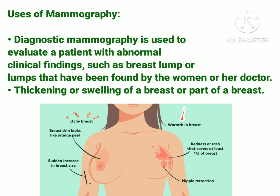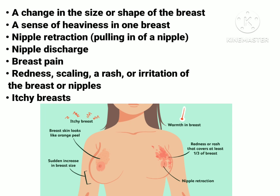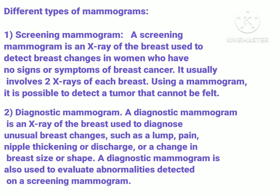To know the shape, size, and position of this mass, the doctor recommends mammography. Second, whenever a doctor finds swelling or thickness of a breast, mammography is also recommended. Third, whenever there is a change in size or shape of a breast. Next: sense of heaviness in one breast; nipple retraction, meaning when a patient's nipple is turned inward or lying flat against the breast; nipple discharge, meaning any release of fluid from the nipple during an unusual period; breast pain; redness, scaling, rash or irritation of the breast or nipples; and lastly, itchy breast.